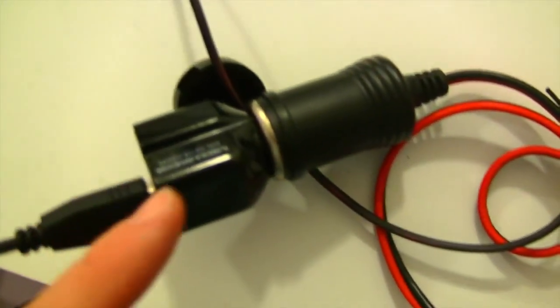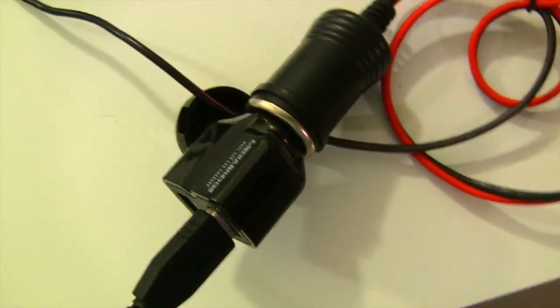The first is a dual USB charger made by Mediabridge. It has a 1.0 amp setting and a 2.1 amp setting, depending on how quickly you want your phone or other device to charge.